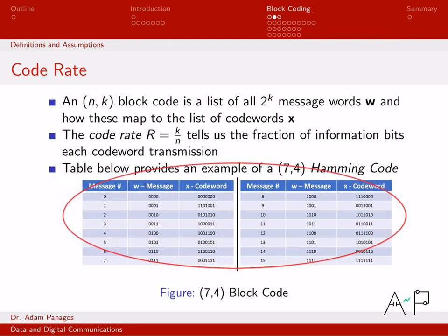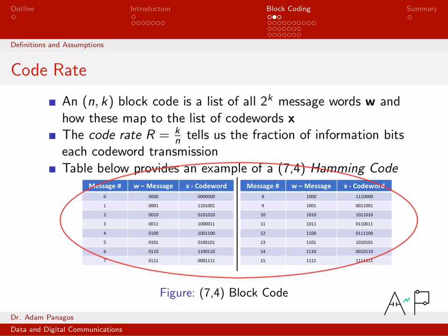This table right here, we're going to use that really throughout the rest of the videos. This is a specific instance of what's called a Hamming code, and we'll define what a Hamming code is, obviously. But this table here, and the list of the 16 messages, those original message words, the W, and the code words that they map to, we'll be revisiting this table quite a few times in the subsequent examples. So this is just one particular instance of a block code.